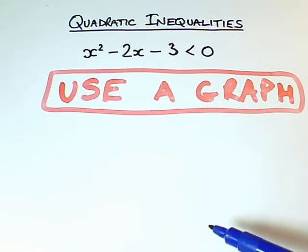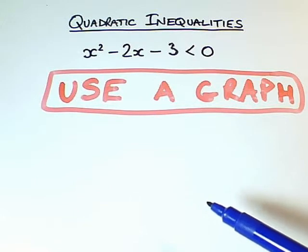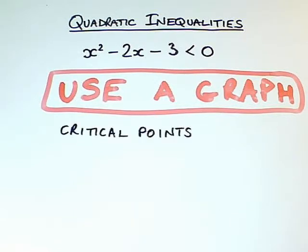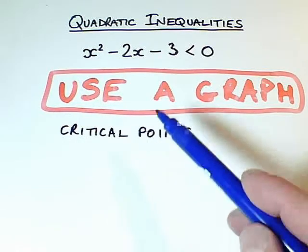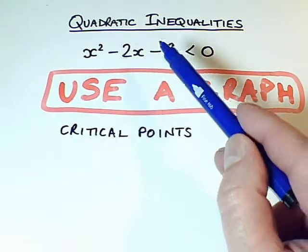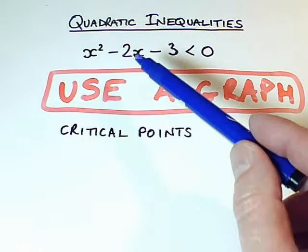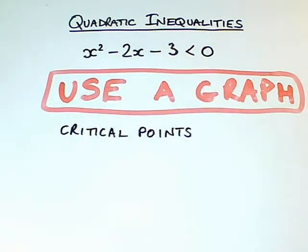And it's going to cross the x-axis twice, and I'm interested in those points, those critical points. So I'm going to calculate the critical points, and they're going to be when this graph of this y crosses the x-axis. In other words, when this y is going to equal 0.